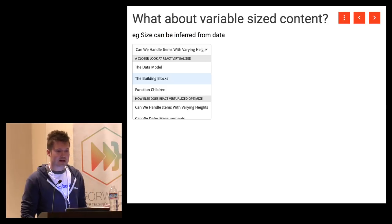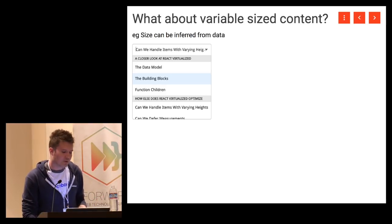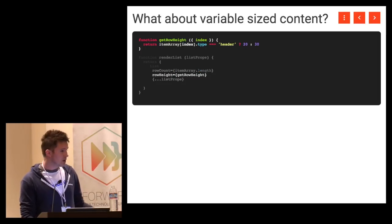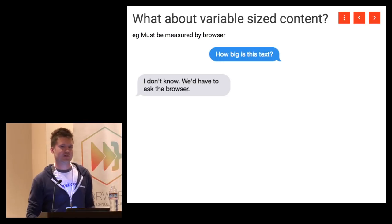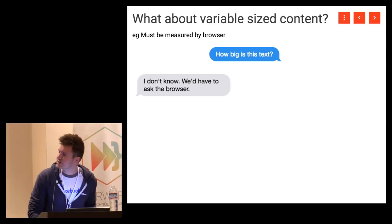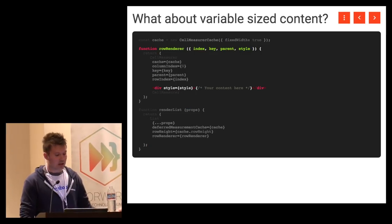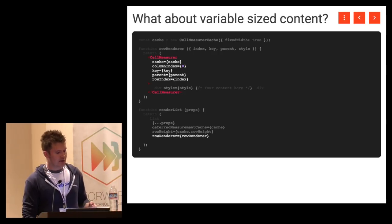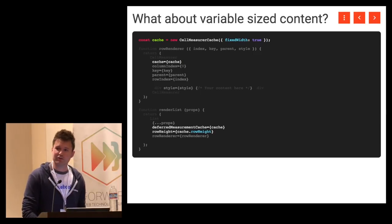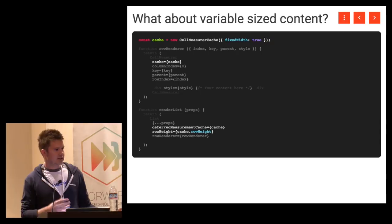There are two solutions. If you can infer the size from your data — for example, a dropdown list with headers and items of known sizes — that's simple. React Virtualize lets you pass a function instead of a number for row height: given an index, what is the height? But what if content needs to be measured by the browser with real fonts, padding, and styles — like a chat application? For that I have a component called CellMeasure. You wrap your row with CellMeasure, and it waits for your content to render asynchronously, measures it, and puts the value into a cache configurable with constraints like default size and minimum size.